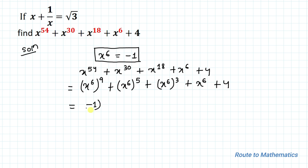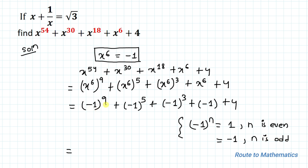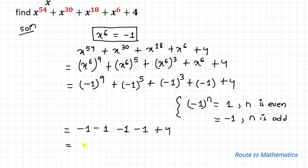Substituting x to the power 6 equals minus 1, we have: (minus 1) to the power 9 plus (minus 1) to the power 5 plus (minus 1) to the power 3 plus (minus 1) plus 4. Applying the exponential rule — (minus 1) to the power n equals 1 when n is even and minus 1 when n is odd — since 9, 5, and 3 are all odd, each term equals minus 1. So we have minus 1 minus 1 minus 1 minus 1 plus 4, which is minus 4 plus 4 equals 0.